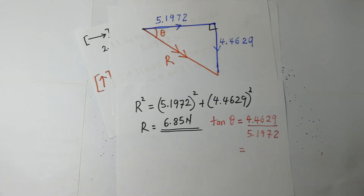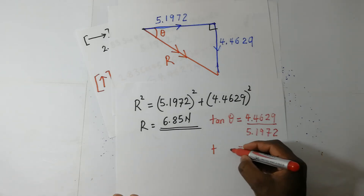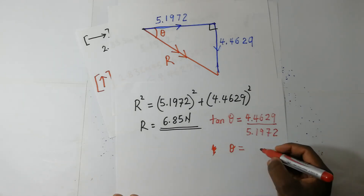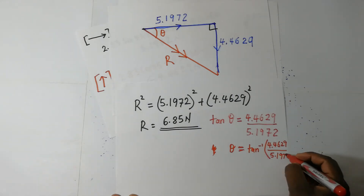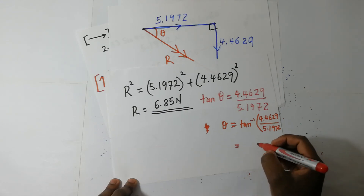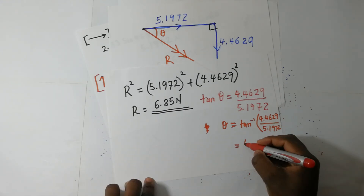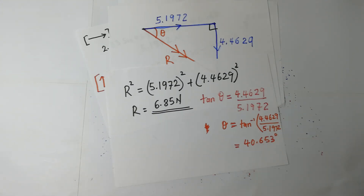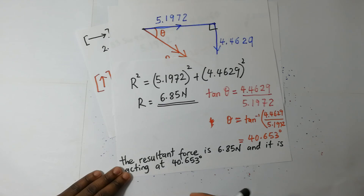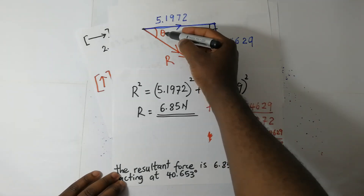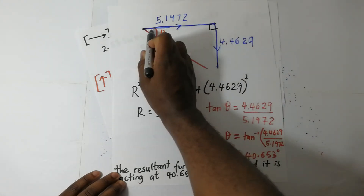From there, we can go ahead and find theta, which is the inverse tan. So our answer here will be — we shall conclude by saying this is 40.653 degrees. This resultant force is acting at that angle; it's below the positive x-axis.